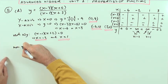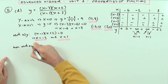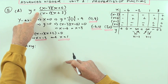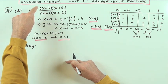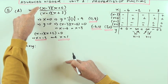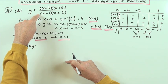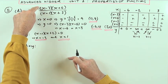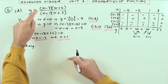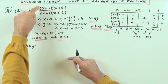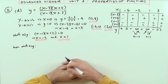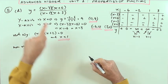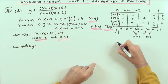Now I want the non-vertical asymptote. Since the leading term on top is x squared and on the bottom is also x squared — they're the same degree — the asymptote is going to be y equals one. If the top had 2x squared and the bottom just x squared it would be two; if it was 2x squared over 3x squared it would be two-thirds. But I need to see how it approaches, so I'll carry out a division.